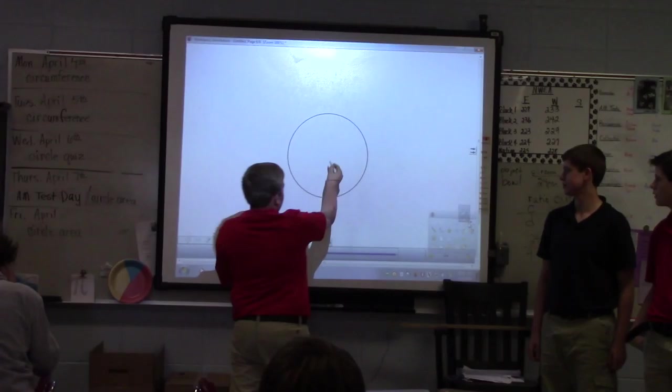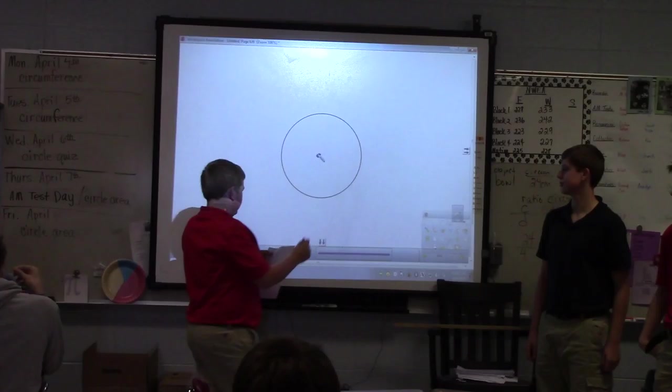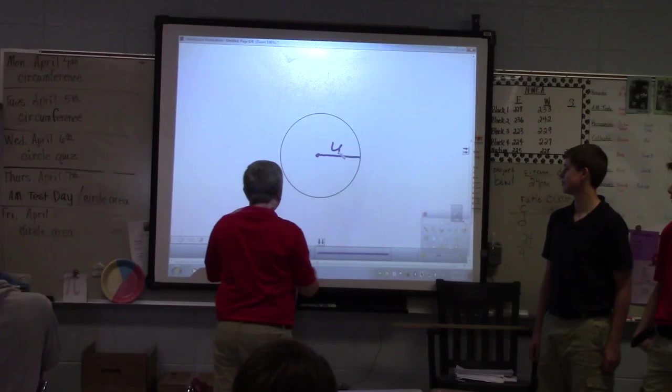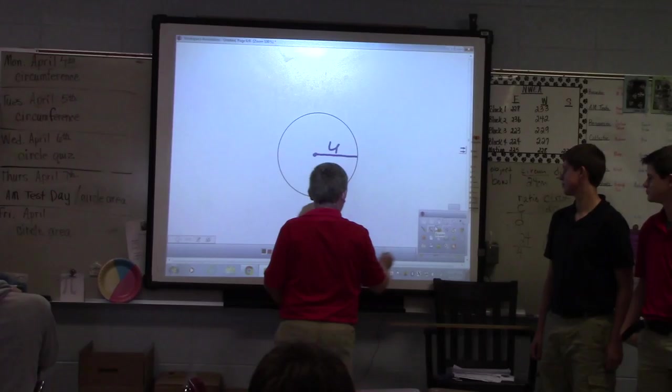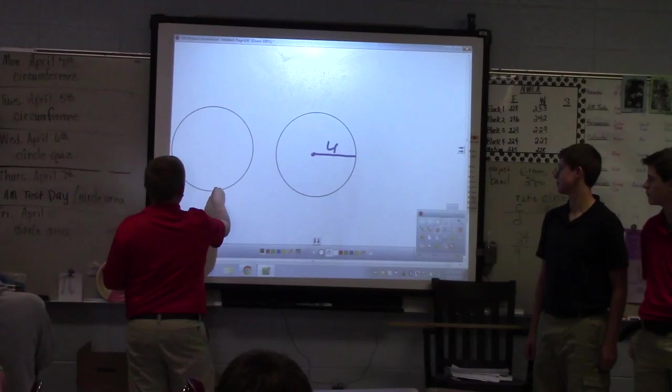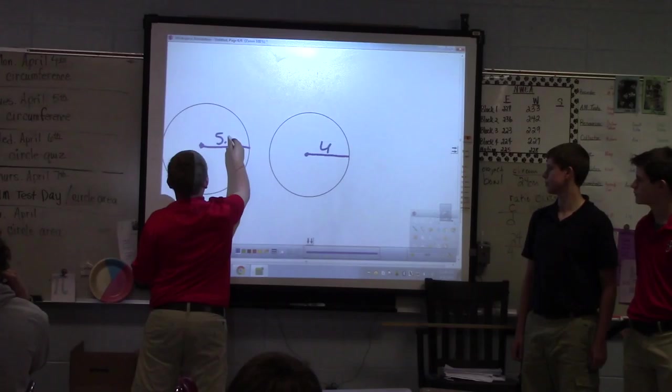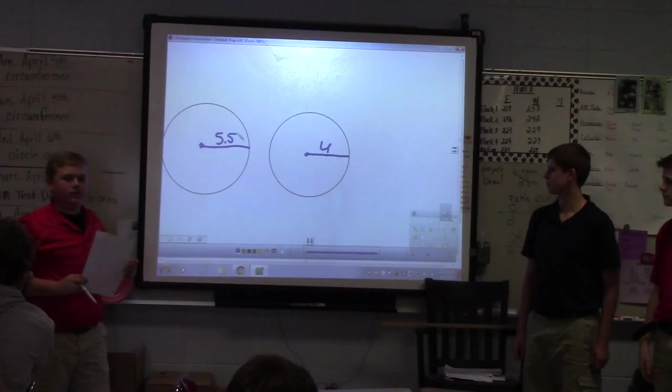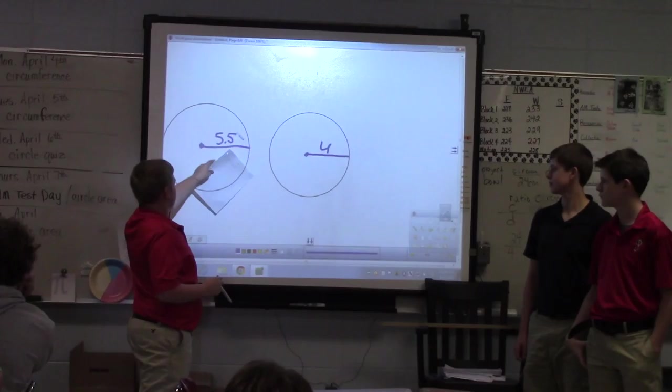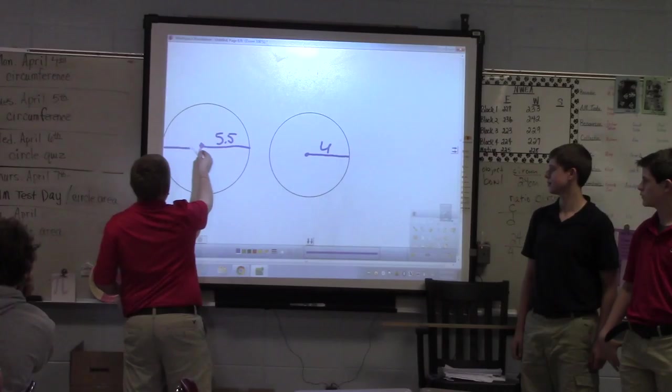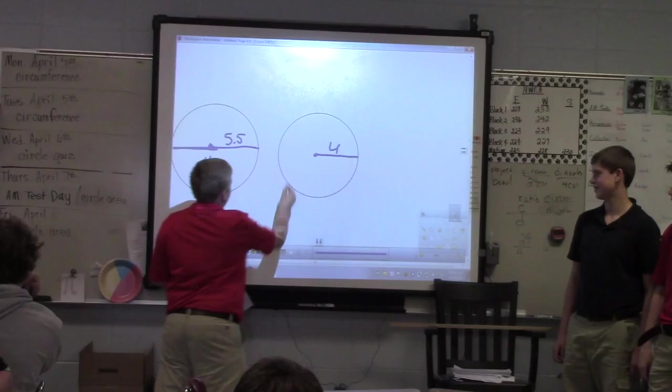At first it said the radius of the first pizza was 4, where you have to start at the middle and then go out. The radius is from this point to one of the sides, and that was 4. And then the other one, its radius was 5.5. Then since this was talking about the circumference, we knew that we had to find the diameter. The diameter is just straight through the middle of the circle, so this whole thing was 11 and this one was 8.